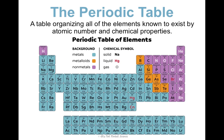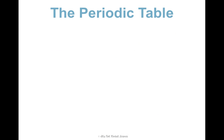The periodic table is a table organizing all of the elements that we currently know to exist, and it organizes them by atomic number and chemical properties. We're going to talk about how it's organized in this concept.